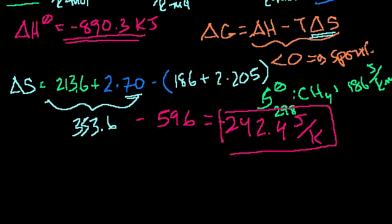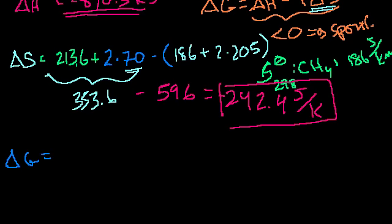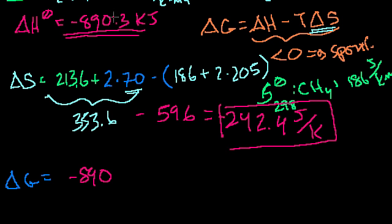So our delta G is equal to our delta H. We're releasing energy, so it's minus 890. I'll just get rid of the decimals. We don't have to be that precise. Minus our temperature. We're assuming that we're at room temperature, or 298 kelvin. I should just say 298 kelvin.